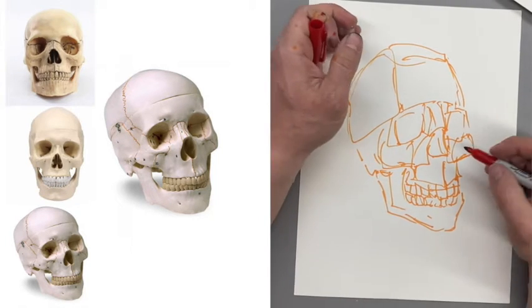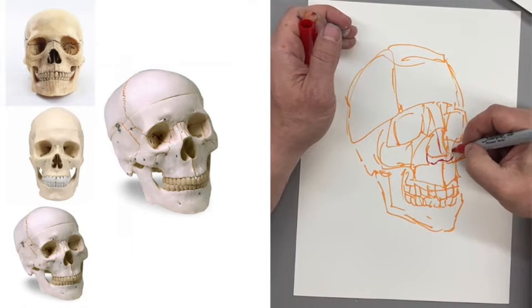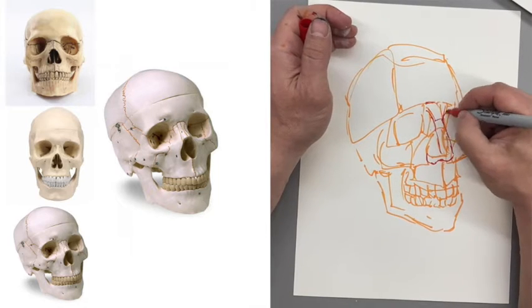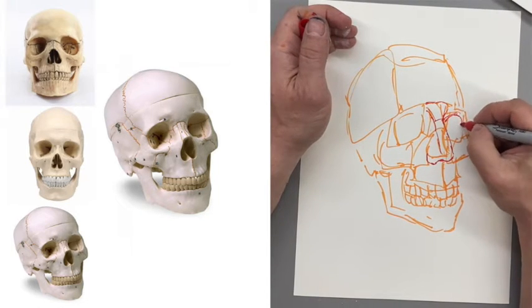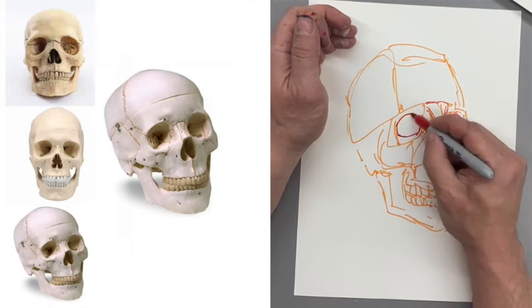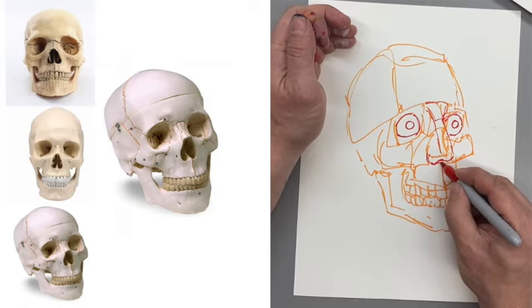Okay, so three-quarter view. When I'm looking at those planes that I was telling you about, think about how those eyes would sit in the sockets so that it's partly covering up some of the sockets.